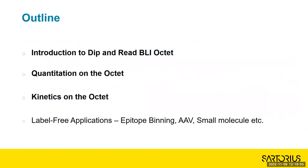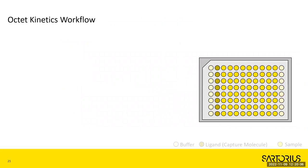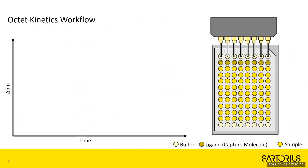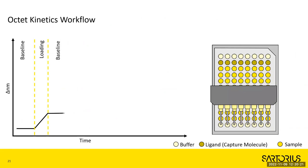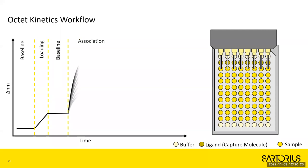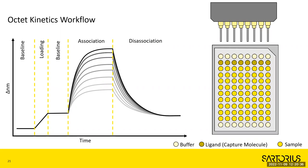Next up is kinetics, which flows right into binding kinetics. In an animated workflow: you have your eight biosensors, you hit a quick baseline to make sure the signal is stable, then go into the ligand loading step. You want to make sure it's stable, so there's another baseline lock step. Then you go into your dilution series of analyte association, then go back into buffer and allow the molecules to dissociate.